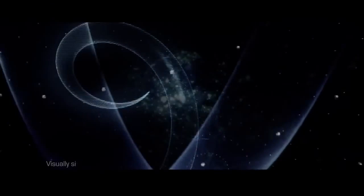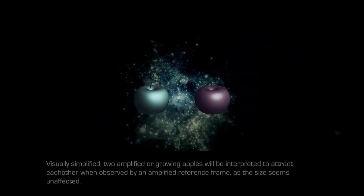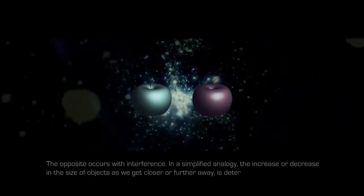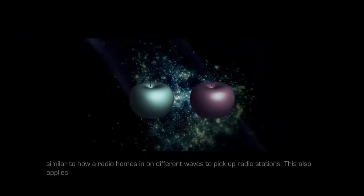Visually simplified, two amplified or growing apples will be interpreted to attract each other when observed by an amplified reference frame, as the size seems unaffected. The opposite occurs with interference. In a simplified analogy, the increase or decrease in the size of objects as we get closer or further away is determined by the shift in vectors of the reference frame, similar to how a radio hones in on different waves to pick up radio stations. This also applies to the influence of gravity.